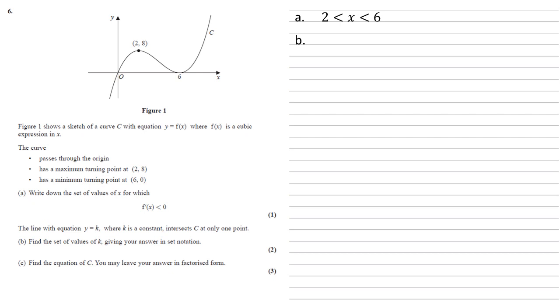The line with equation y equals k, where k is a constant, intersects C at only one point. For part B, we need to find the set of values of k, giving our answer in set notation. Any line y equals k is going to be a straight horizontal line going through k on the y-axis, and we're told it only goes through C, the curve, at one point exactly.